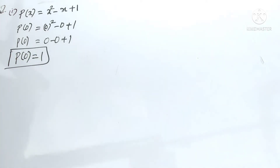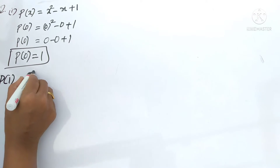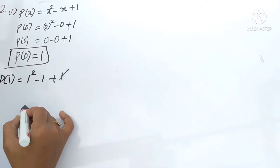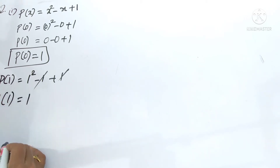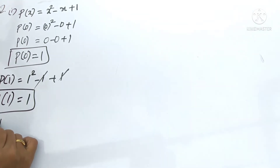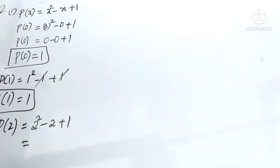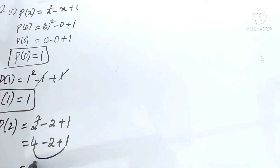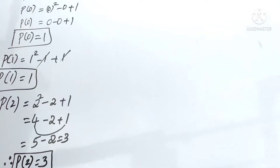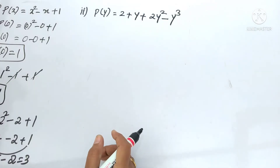So finally p of 0 is equal to 1. Now p of 1 - write 1 in the place of x. Plus 1 and minus 1 will get cancelled, so p of 1 equals 1. Now p of 2 - substitute 2 in the place of x: 2 square minus 2 plus 1. 2 square means 4, minus 2, plus 1. First addition: 4 plus 1 is 5, then 5 minus 2 is 3. So p of 2 equals 3.